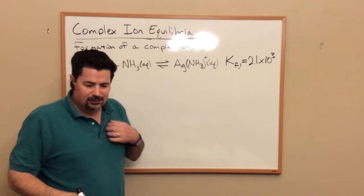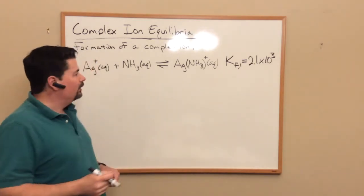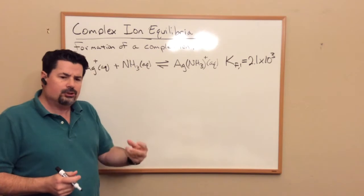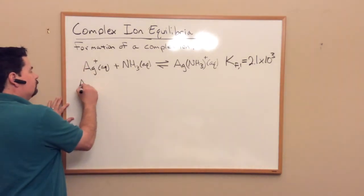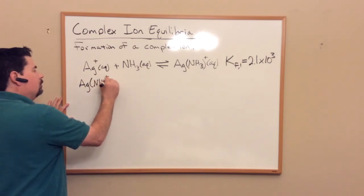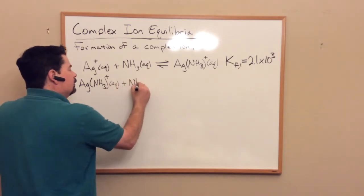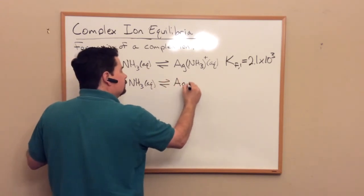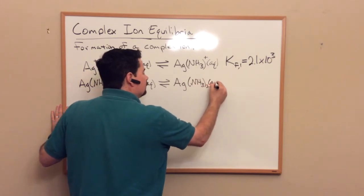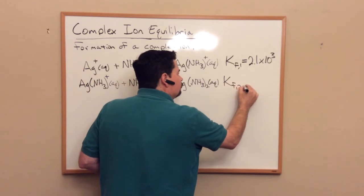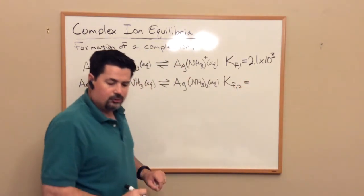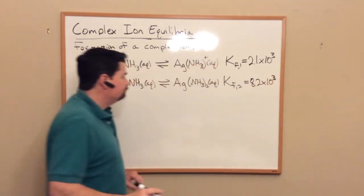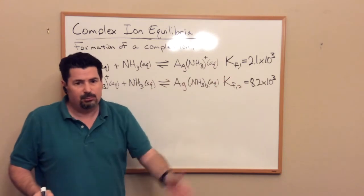See, just like regular lecture, I make random mistakes here and there. Anyway, it turns out that for this particular species, for silver, you can actually get another ammonia bonding to it. So we can have Ag(NH3)+ aqueous plus another NH3 giving Ag(NH3)2+. And here Kf2 is going to equal, in this case, 8.2 times 10 to the third.